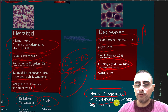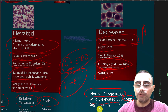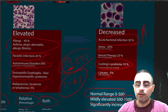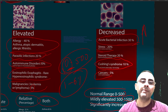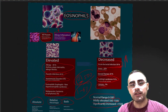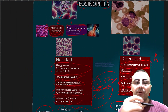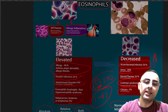The normal range is 0 to 500 count per microliter. Mildly elevated is more than 500 but less than 1500. Significantly elevated is more than 1500.